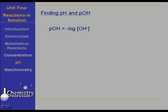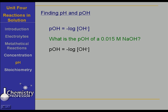Now let's talk about pOH. pOH is the negative log of the concentration of the hydroxide ion. What is the pOH of a 0.015 molar sodium hydroxide? That's a strong base, so what we need is the negative log of the concentration of the hydroxide ion — the negative log of 0.015 molar — and I got that the pOH was 1.8. Does that mean the solution is acidic? No, it doesn't. That's pOH, which means it's pretty strongly basic.